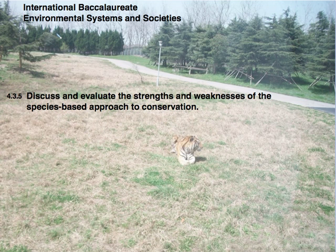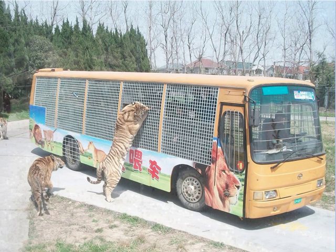Welcome again. Today we consider topic 4.3.5: discuss and evaluate the strengths and weaknesses of the species-based approach to conservation. Tigers at the Shanghai Wild Animal Park are just a few of an estimated 5,000 captive tigers in China — almost twice the population of wild tigers, estimated at about 3,000. The captive tiger population in the United States is also greater than the wild population. These giant cats are a classic example of the species-based approach to conservation.